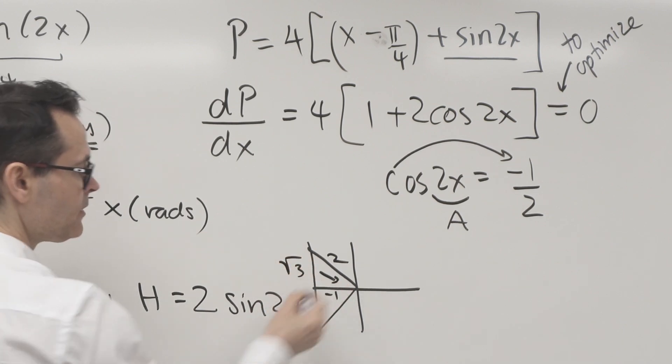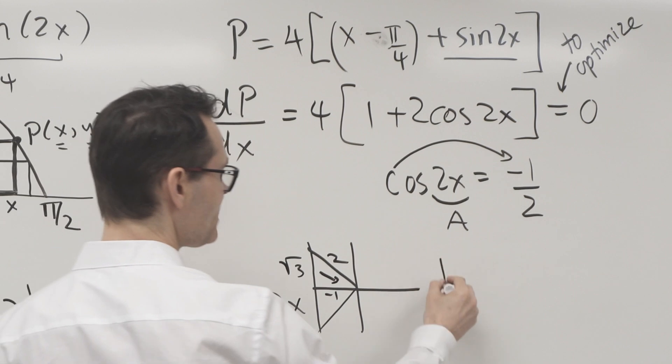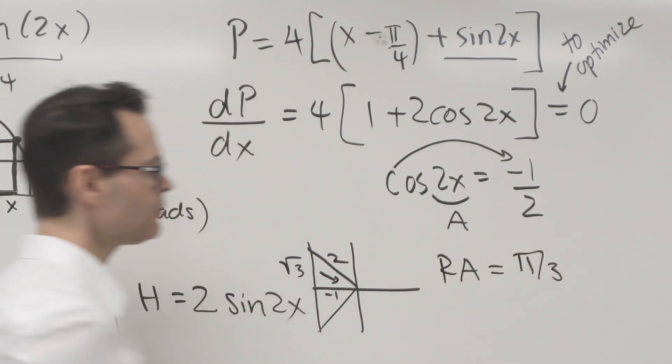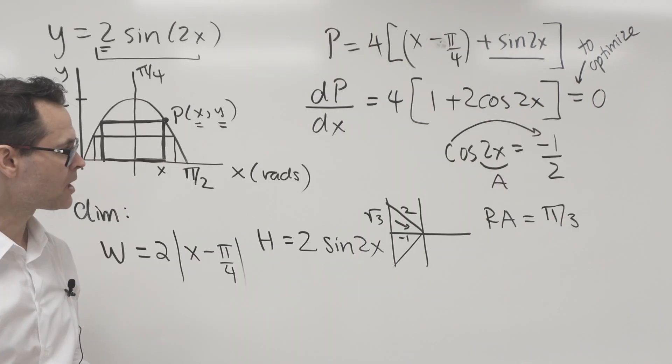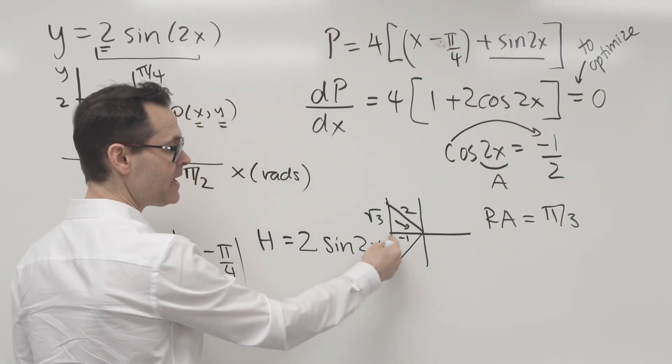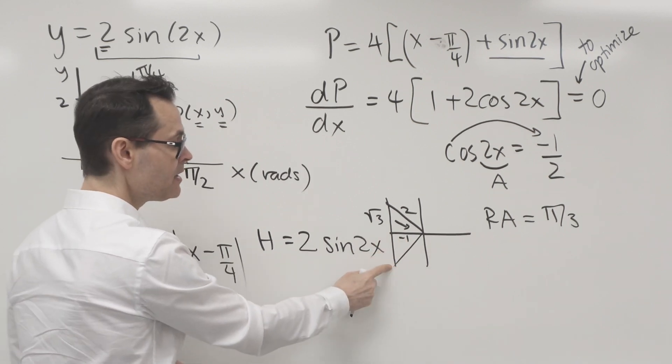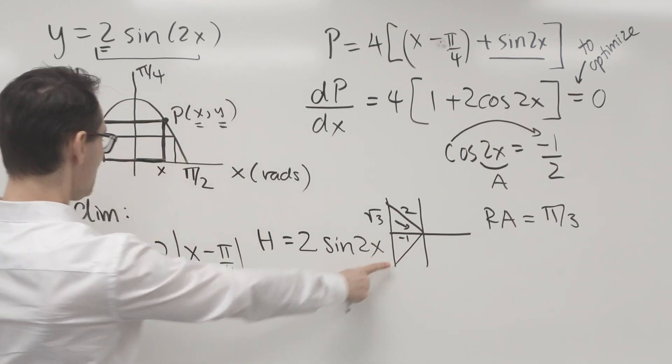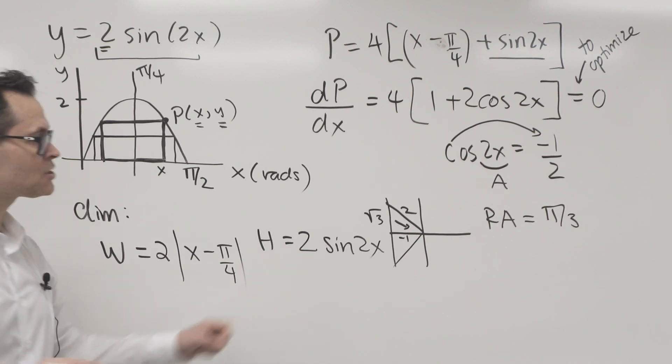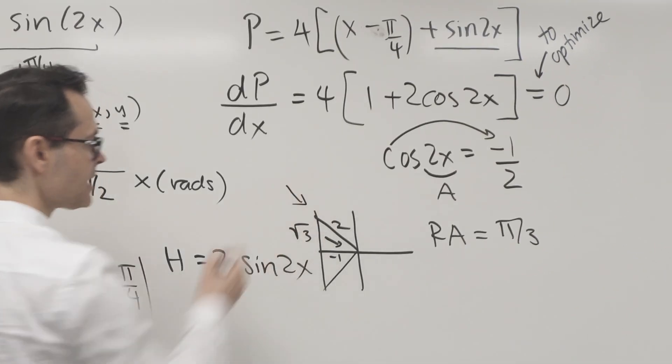So that's interesting because now what I know is I'm not going to pay attention to the third quadrant down here because down there sine is negative, which would make the height negative, and that doesn't make any sense. So I'm strictly going to pay attention to the second quadrant.